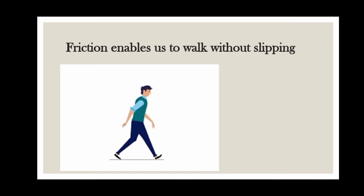In order to take a step forward during walking, we lift one foot off the ground and push the ground backwards with the other foot. If there were no friction between the sole of our shoe and ground, then our shoe would slip backwards. Since we push the ground backwards, the force of friction acts in the opposite direction — the forward direction — and prevents our foot from slipping backwards.